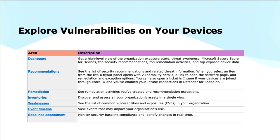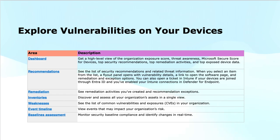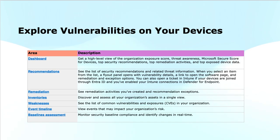This section is vital for identifying areas that could be exploited by attackers. The Event Timeline provides a chronological view of all events related to vulnerabilities, including detections, remediations, and status changes. It helps you track the lifecycle of vulnerabilities and the actions that are taken.